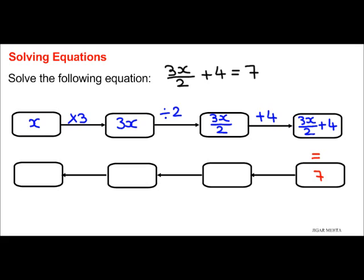Now opposite of addition of 4 is subtraction of 4, so 7 minus 4 gives me 3, which means 3x over 2 equals 3.